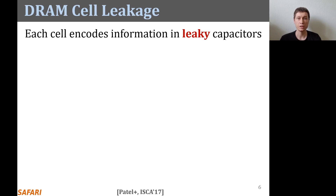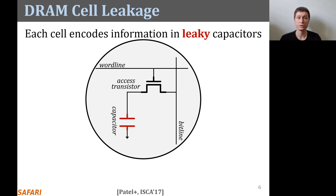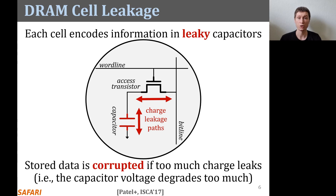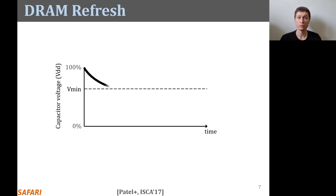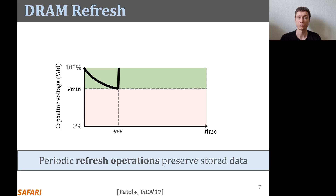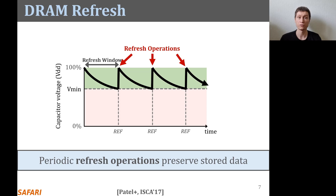Each DRAM cell stores data in a fundamentally leaky capacitor. Here's a simplified diagram of a DRAM cell where the capacitor in red stores the data and the access transistor gates access to the data. There are a number of leakage paths by which charge can enter or exit the capacitor. The stored data can be corrupted if too much charge leaks, which is the same as saying if the capacitor voltage degrades too much. The voltage decreases over time in an exponential decay. There's a threshold Vmin under which we can no longer guarantee correct data retention. In order to prevent retention failures from charge leakage, periodic refresh operations are issued to recharge the capacitor voltage. The intervals between refresh commands are referred to as the refresh window.